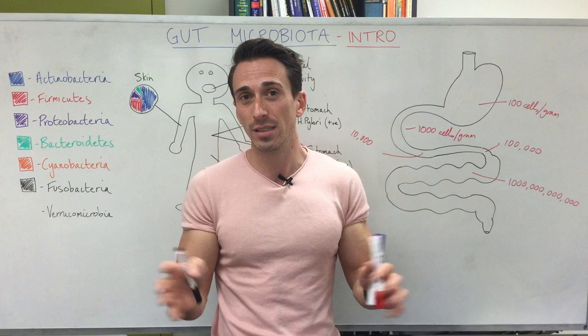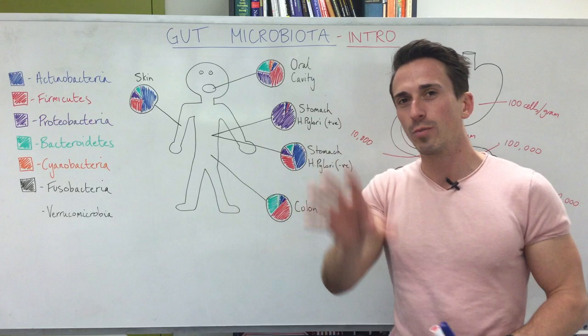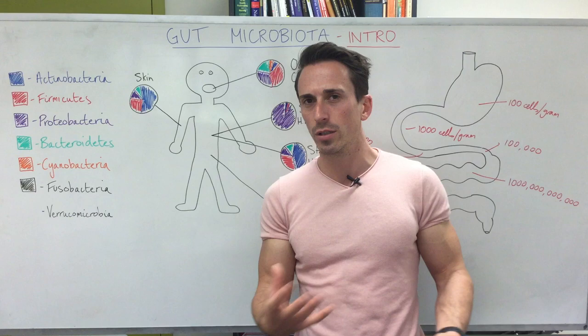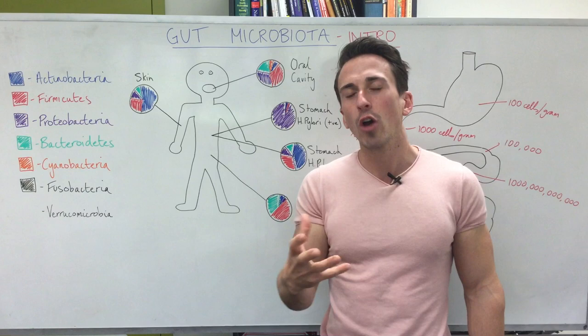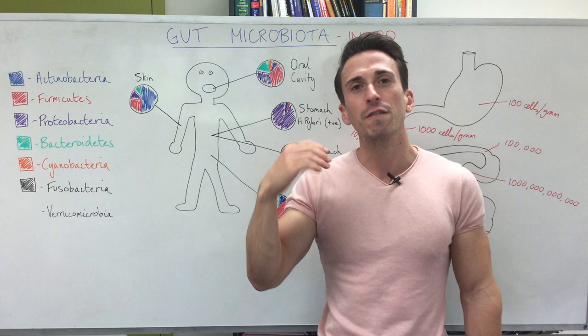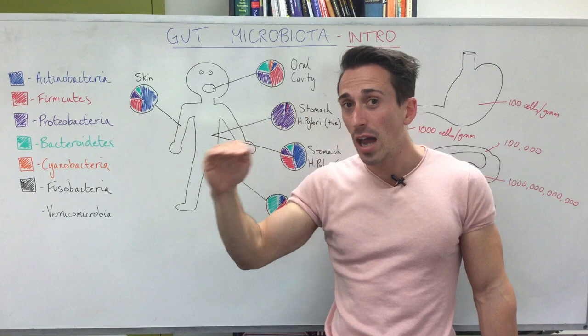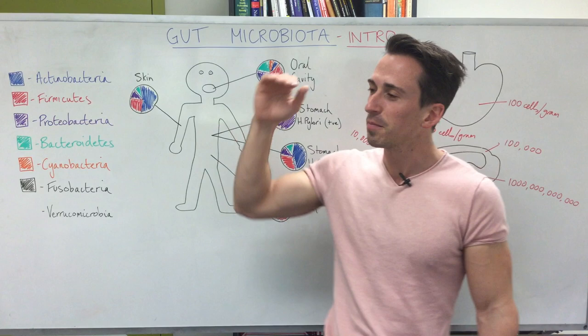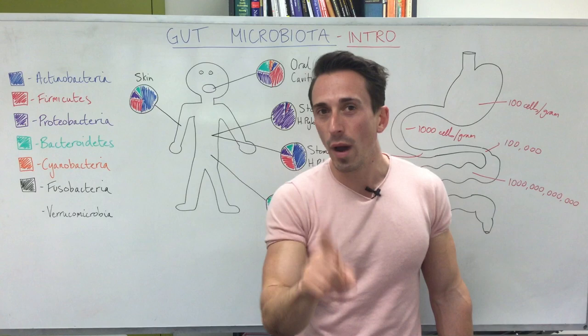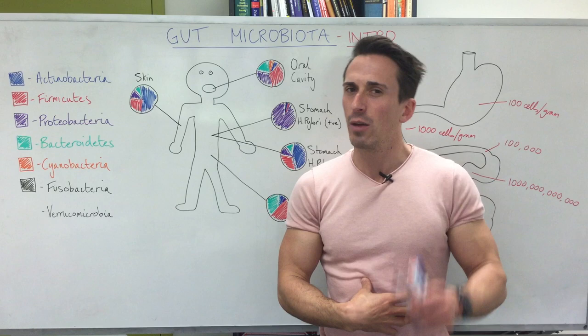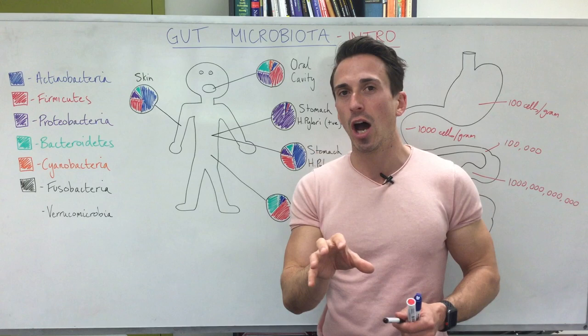Now let's talk about the type of bacteria living within our gut. There are around 50 known phyla of bacteria on Earth — using the taxonomical hierarchy: life, domain, kingdom, phyla, then down to genus and species. Of these roughly 59 phyla of bacteria on the planet, human beings have within their gut around 10 or so, and on average, you or I probably only have around six to seven main types of bacterial phyla living within us.